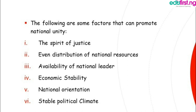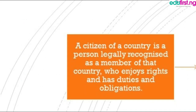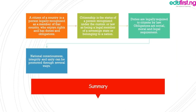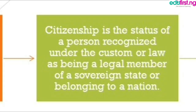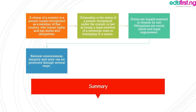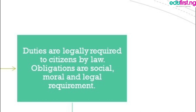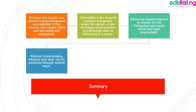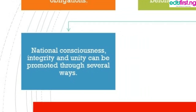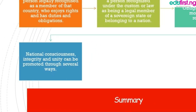Development and national unity is a key to the development of a country. Summary of what we have discussed: a citizen is a person legally recognized as a member of a country who enjoys rights and has duties and obligations. Citizenship is the status of a person recognized under the custom of a law as a legal member of a sovereign state or belonging to a nation. Duties are legally required of citizens by law. Obligations are social, moral and legal requirements. We also discussed national consciousness, integrity and unity, and how they can be promoted through several ways.